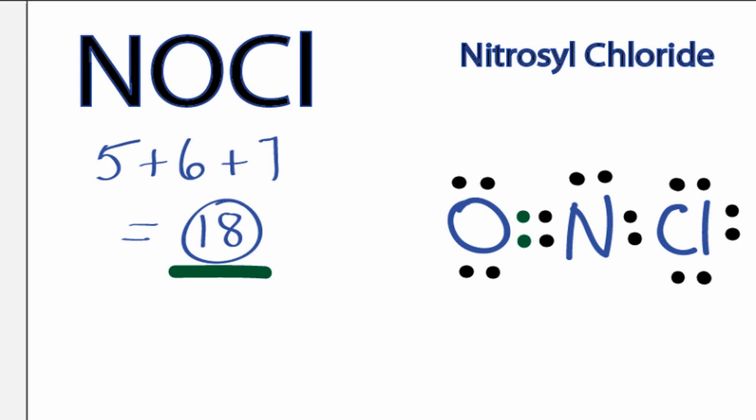If you check the formal charges, you can see that this is the best structure for NOCl, and that the charges add up to 0.